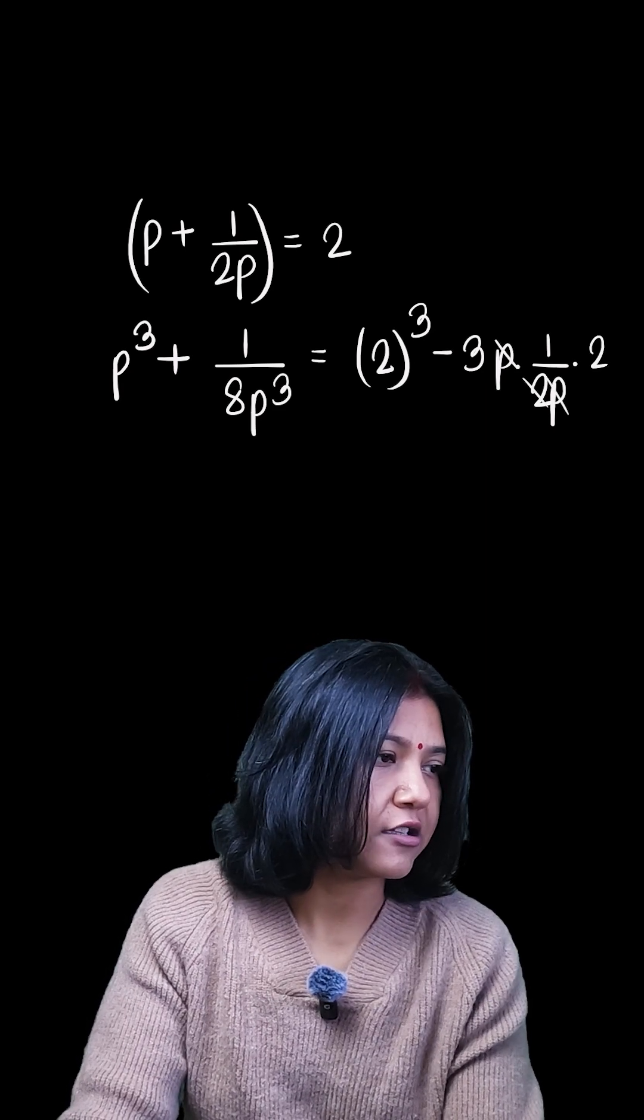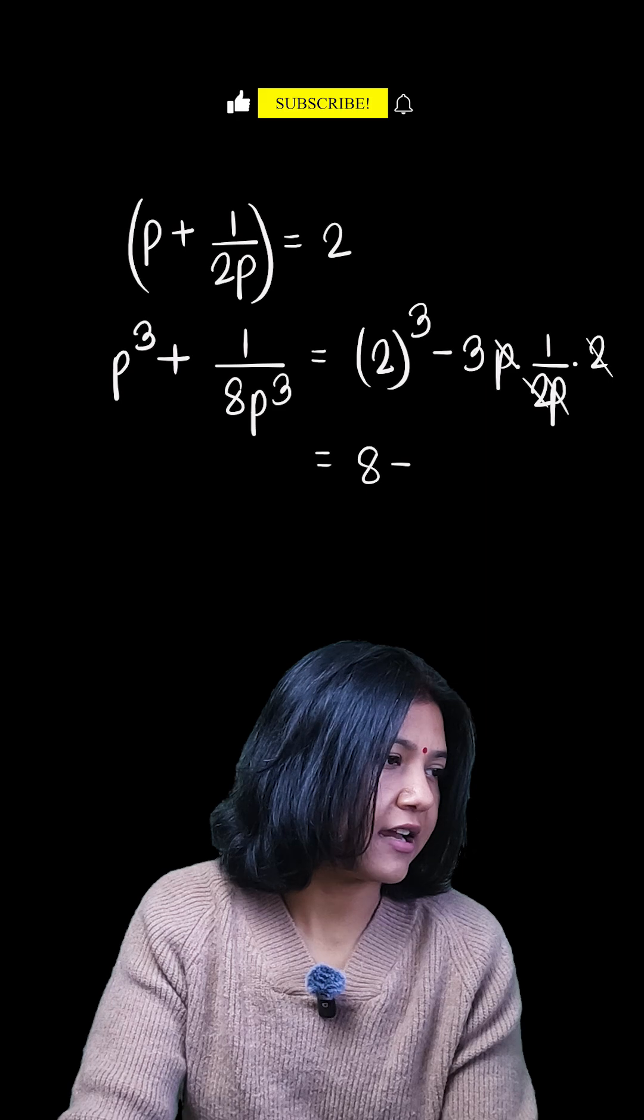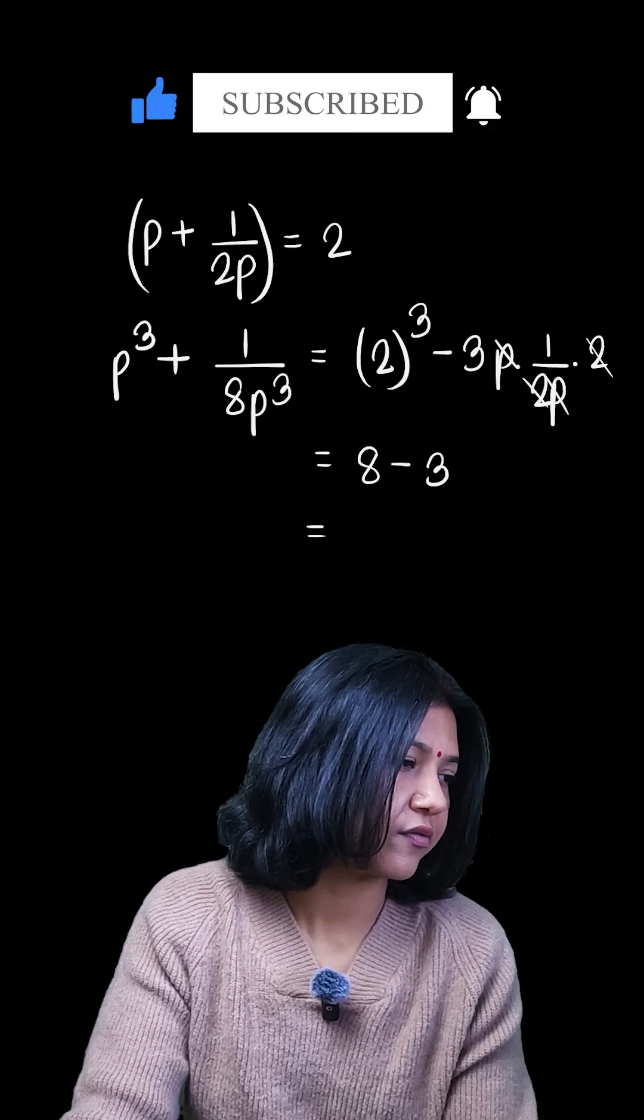So you can just cancel out p and p, 2 and 2. 2³ is 8 minus 3. The answer is just 5. That's it.